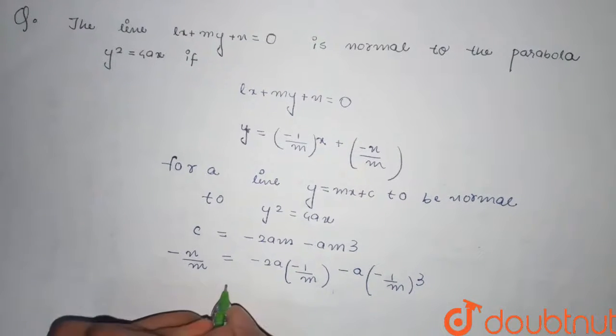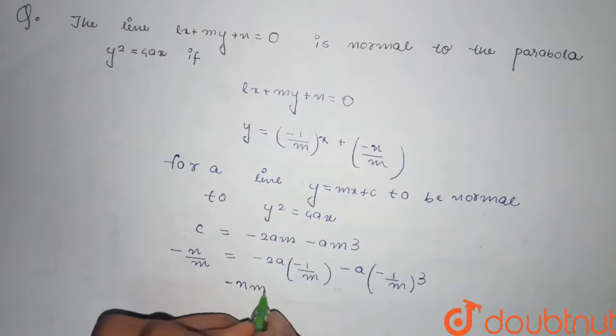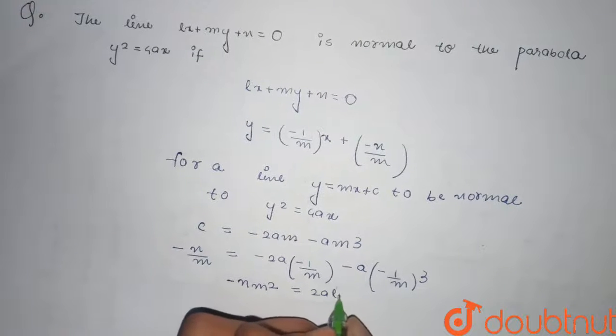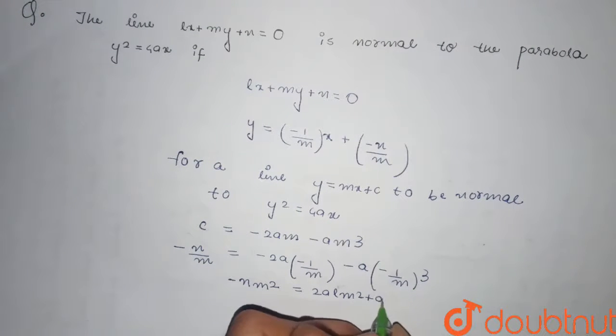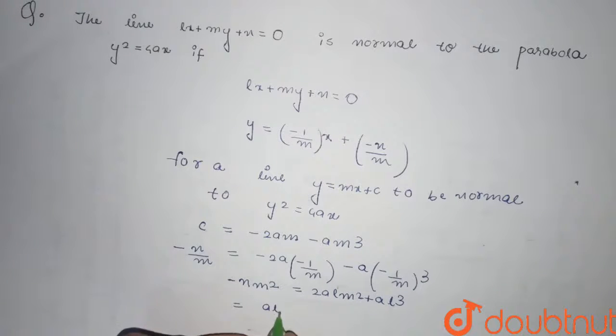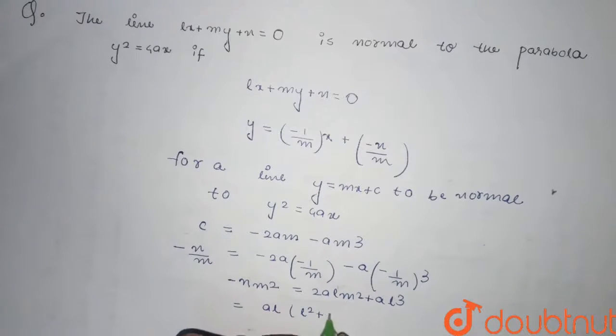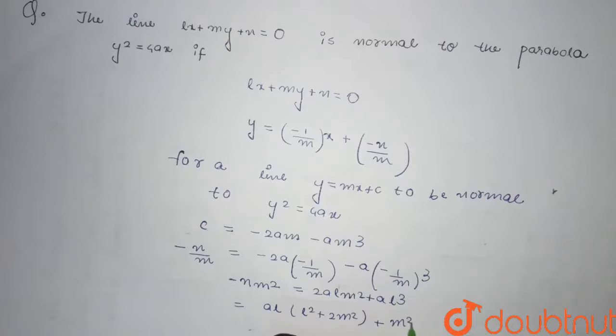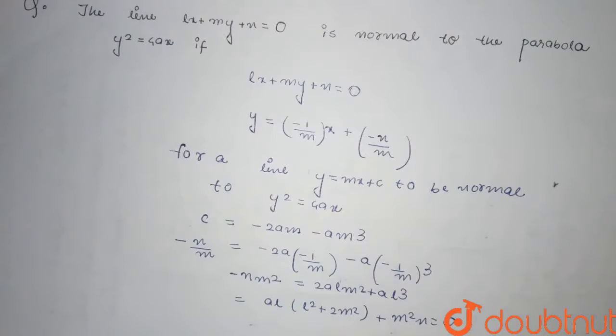On further simplifying it becomes -nm². On taking LCM: 2alm² + al³ is equal to... al², l² + 2m²... plus m²n = 0. So this is the required condition.